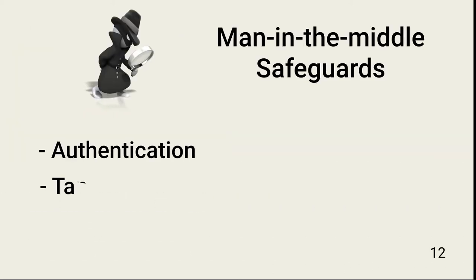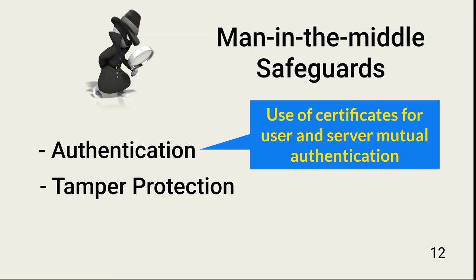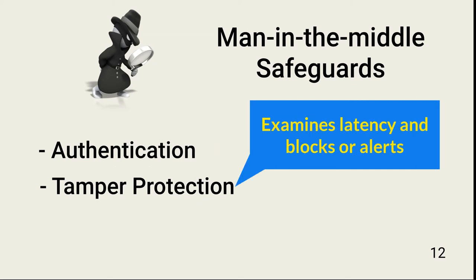There are two primary ways an organization can defend against man-in-the-middle attacks: authentication and tampering detection. Authentication includes use of TLS with certificates to keep the session secure. Forcing both the user device and the server to authenticate with each other would prevent the threat actor from eavesdropping or establishing a connection with the server. In tamper detection, an organization can use tools to examine the latency in transactions. If the latency exceeds expectations based on baselines, the organization can drop the connection or initiate a response.